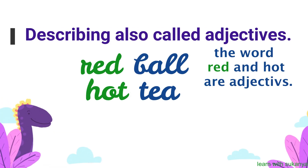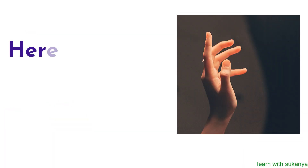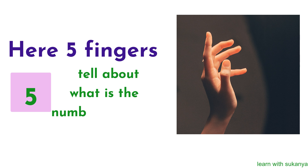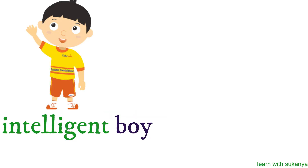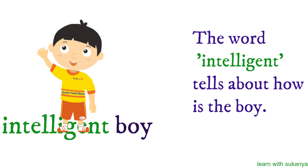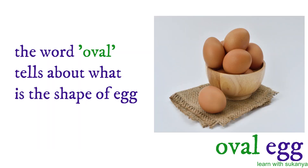Describing words are also called adjectives. For example, five fingers — five tells about the number of fingers. Intelligent boy — the word intelligent tells about how the person is. Oval egg — oval tells about the shape of an egg.